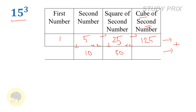Double of 5 is 10 and double of 25 is 50. Now add the two rows, writing only one digit with the rest as carry. Starting from 125: write 5, carry 12. 12 plus 25 is 37, plus 50 is 87: write 7, carry 8. 8 plus 5 is 13, plus 10 is 23: write 3, carry 2. 2 plus 1 is 3. So 3, 3, 7, 5 — the cube of 15 is 3375.